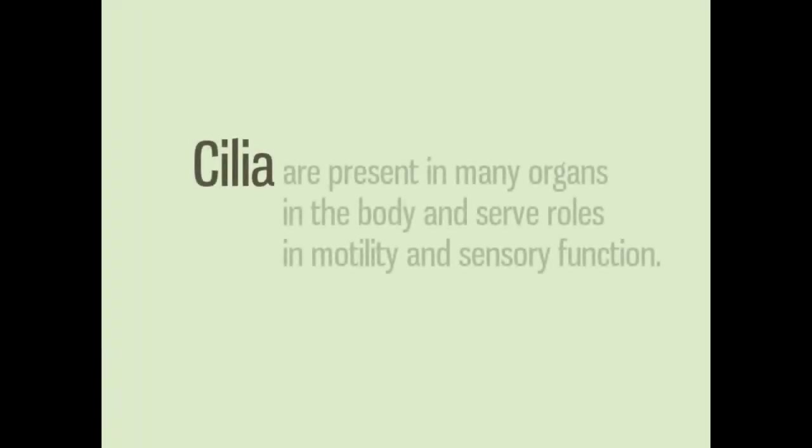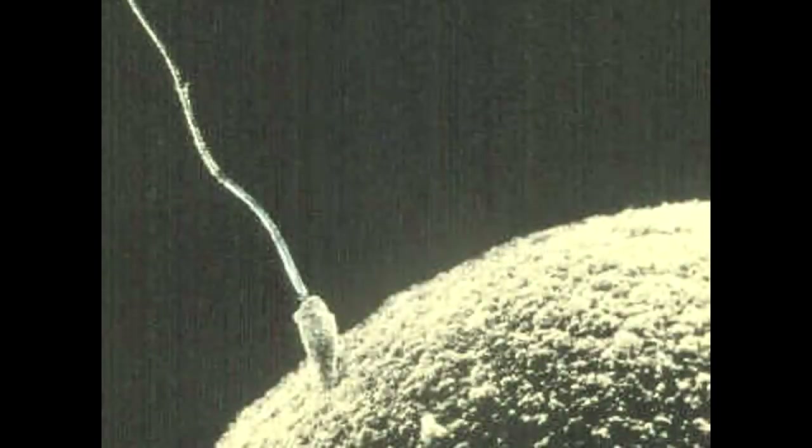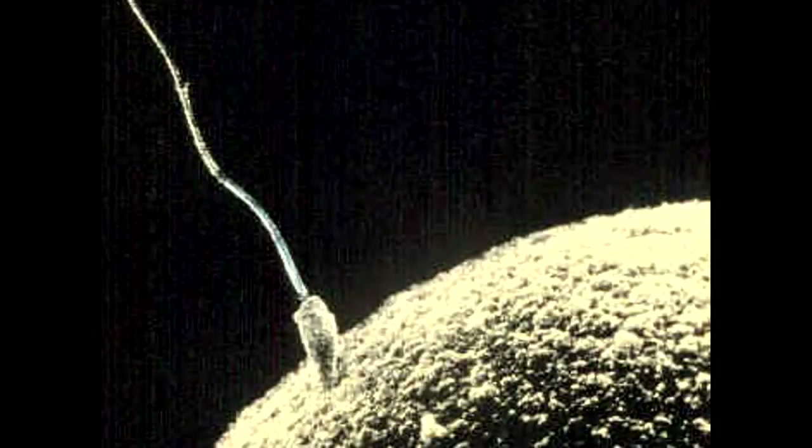Flagella are long bundles of microtubules that can either propel or pull cells in one direction. Cilia are present in many organs in the body and serve roles in motility and sensory function. In males, flagella propel sperm through the female body toward the egg.